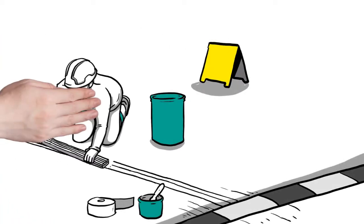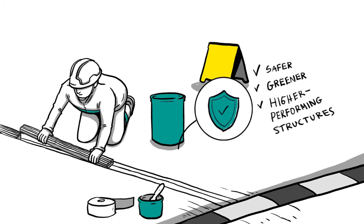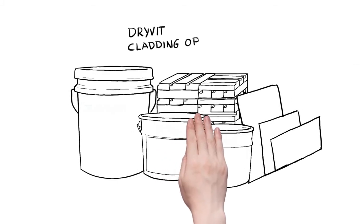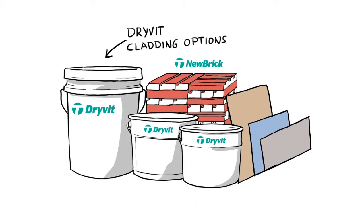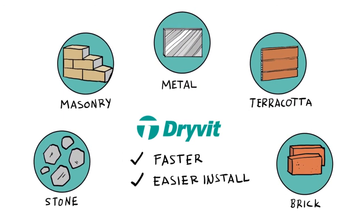Handle extreme movement and create safer, greener and higher performing structures. Cladding options from Drive-It will satisfy any facade aesthetic: stone, masonry, metal, terracotta or brick with a faster and easier install.